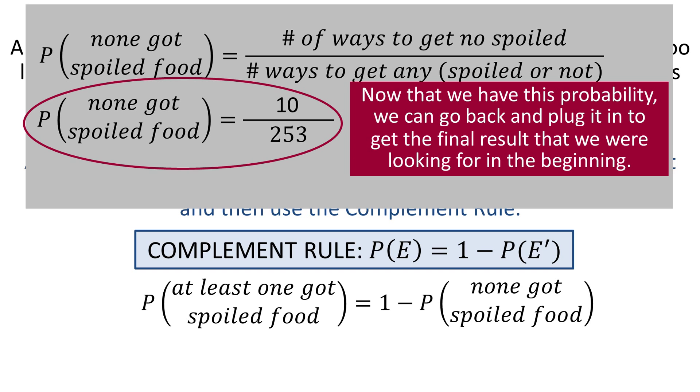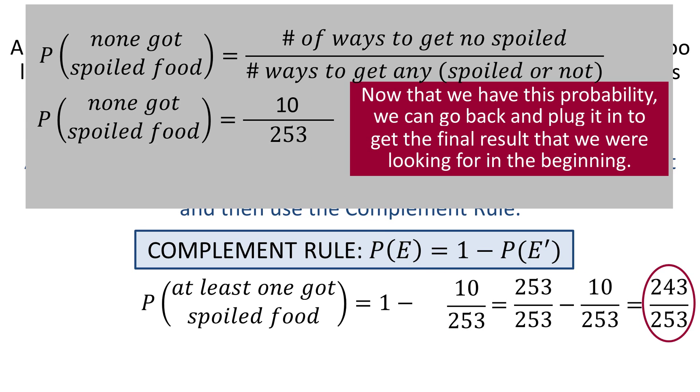Now that's the number, remember, that we wanted to put into the result that we were actually looking for, which is the probability that at least one got spoiled food. And we know that's 1 minus the probability that none got spoiled food. So if I put 10 over 253 in there, 1 minus 10 over 253 is 243 over 253. So the probability that at least one person got spoiled food is 243 over 253.